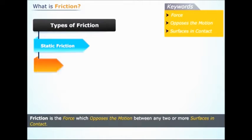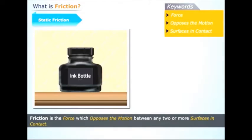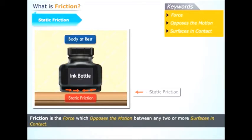There are two types of friction, namely static friction and dynamic friction. Firstly, static friction: when we try to move an object, the friction which appears due to the tendency of the object to move is known as static friction.